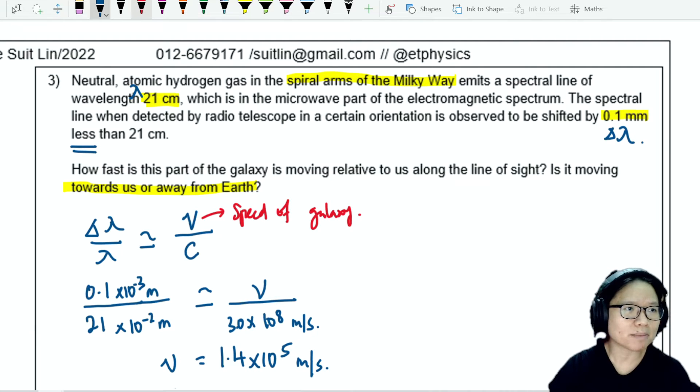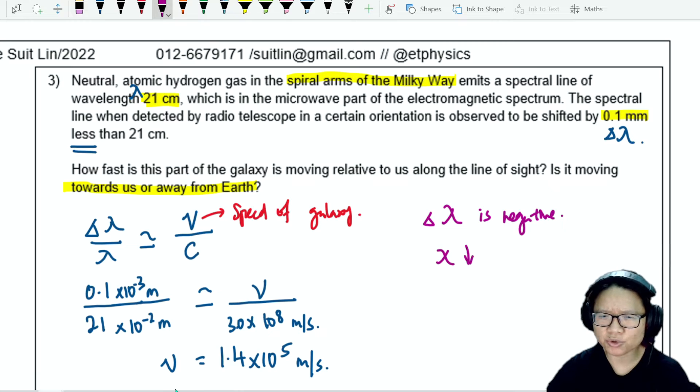Is it moving towards us or away from us? If you notice, lambda actually decreases. The delta lambda is negative. In other words, lambda decrease, which is what we call a blue shift.